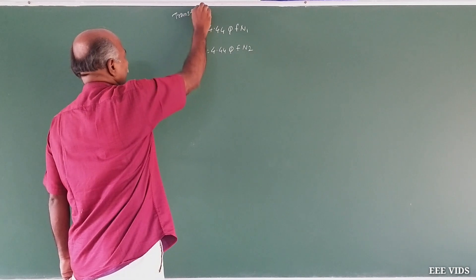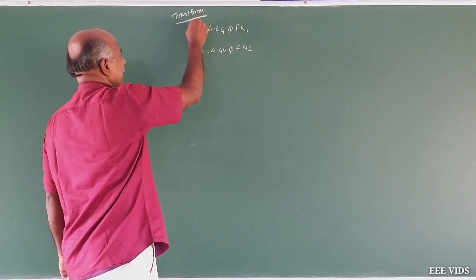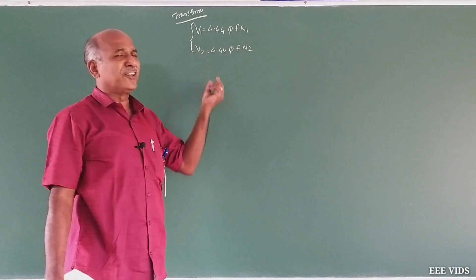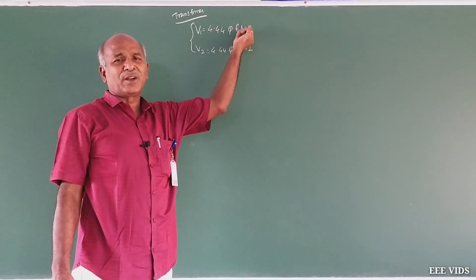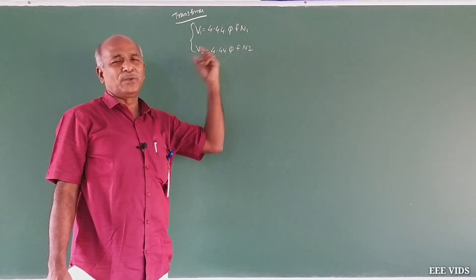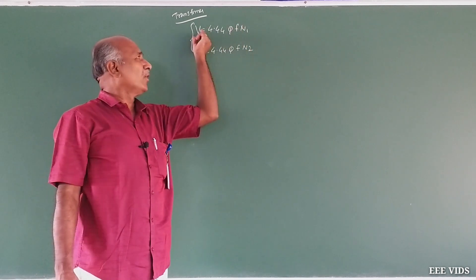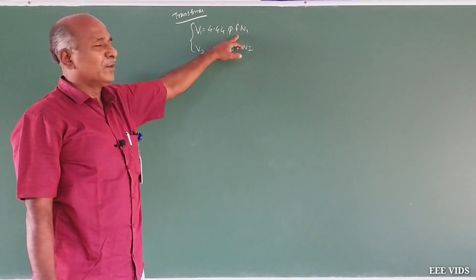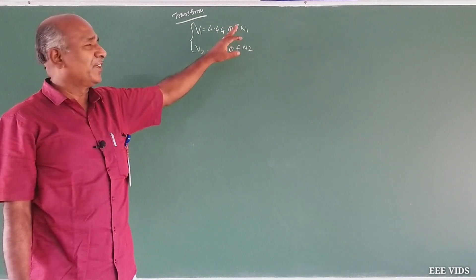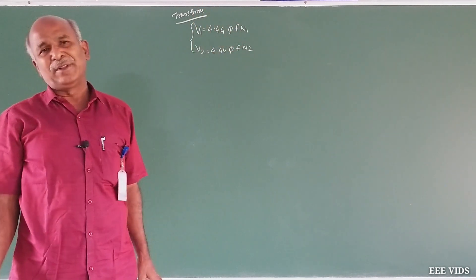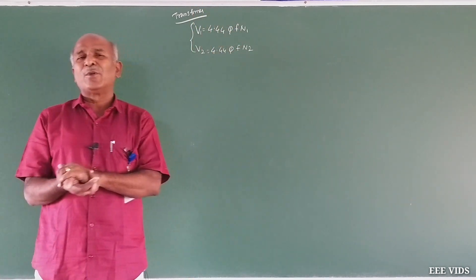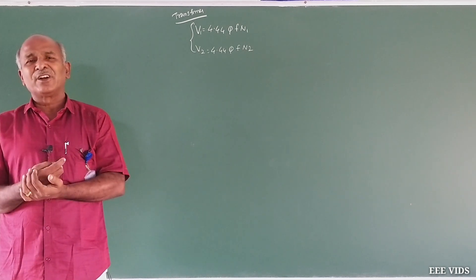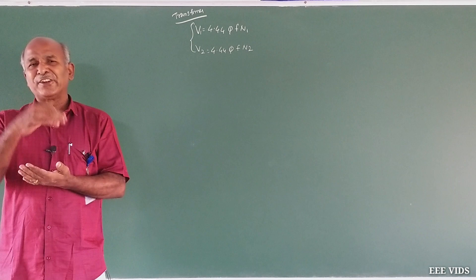In the transformer, we use voltage increase and decrease. To do this, we use the number of turns N1 and N2. We use the voltage increase and decrease by changing the turns. We use the conventional frequency, 50 Hz. The transformer transfers power, and only the transformer turns determine whether we increase or decrease voltage.